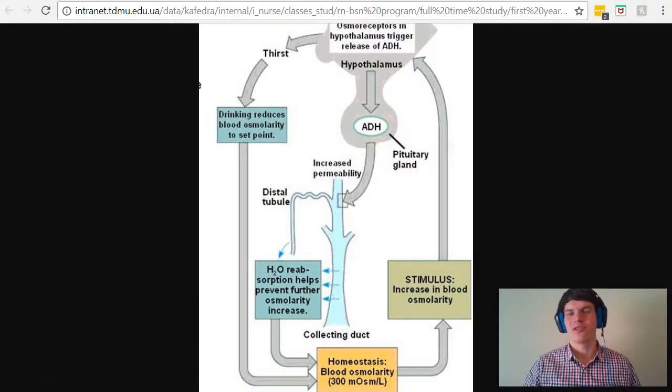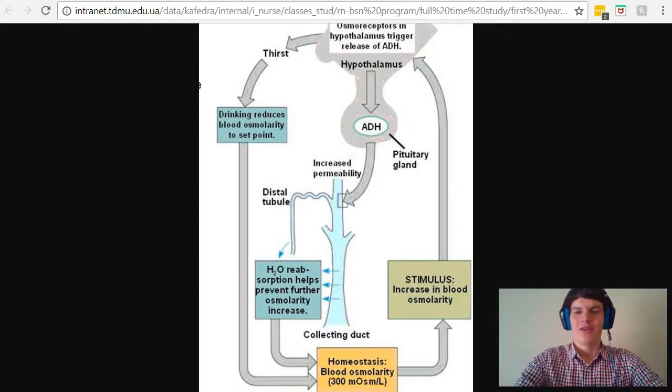Let's talk about one of the triggers for ADH production as seen in this diagram. In this case, the trigger for ADH production is an increase in blood osmolarity.